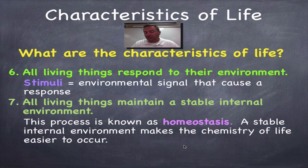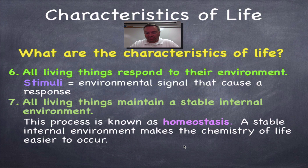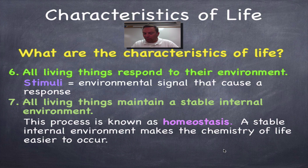Homeostasis is the process that maintains a constant internal environment. That internal environment includes things like water concentration, pH, temperature, and oxygen concentration. We need to keep this environment constant so the chemistry of life can occur easily. When this chemistry gets out of balance, it causes illness, and if it gets too far out of balance, it can cause the organism to perish.